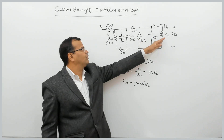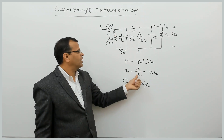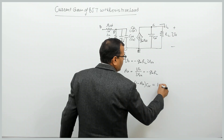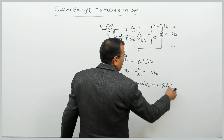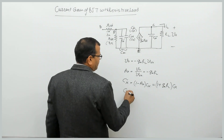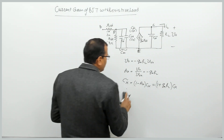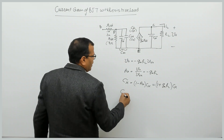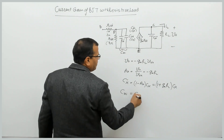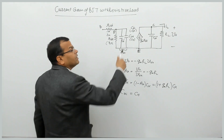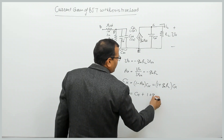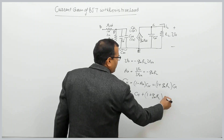The voltage gain AV is V_out divided by V_B-dash-E. So replacing AV with minus gm times RL, C_mu-dash becomes 1 plus gm times RL multiplied by C_mu. Miller's input capacitance Cmi equals C_pi plus C_mu-dash, which is C_pi plus (1 plus gm times RL) times C_mu.